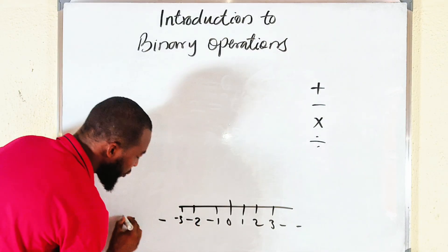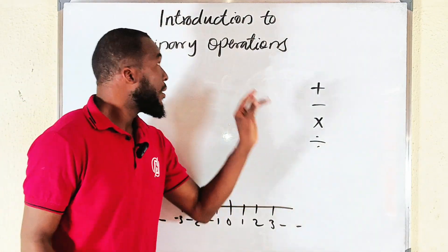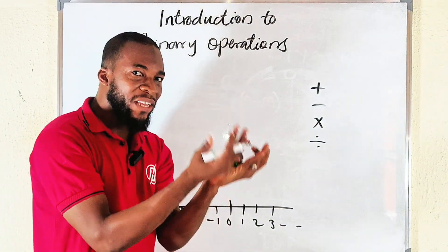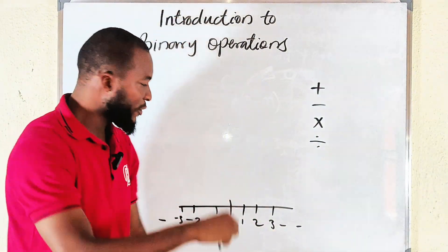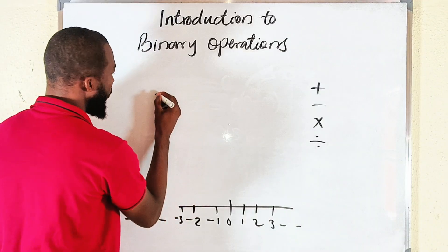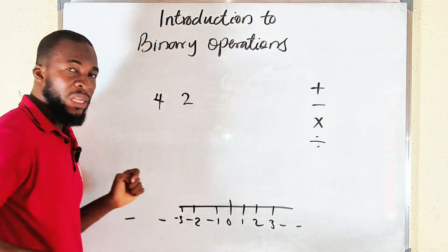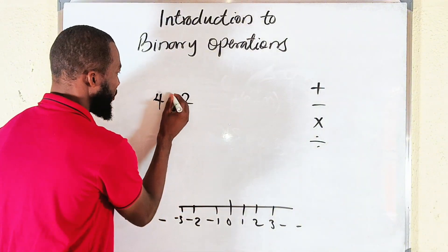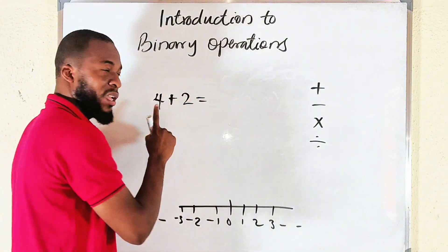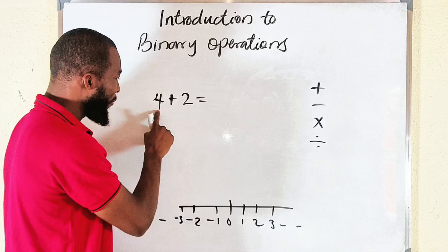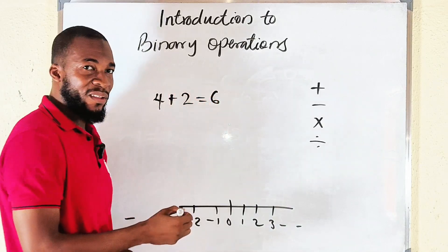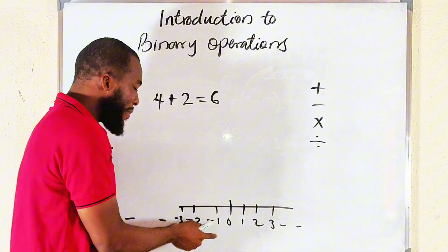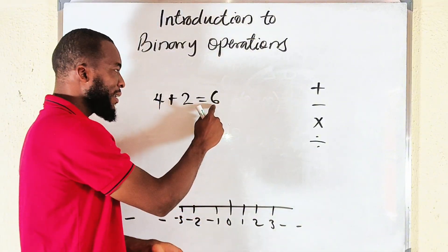Binary operation, I told you, is a rule that combines two elements from that set. So let's take two elements at random: four and two. Relate them with such operation, so in this case I would like to use plus to produce an entirely different element from these two, which is going to give us six.